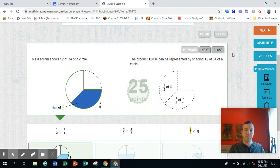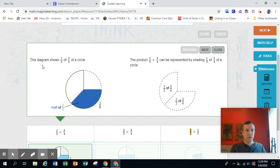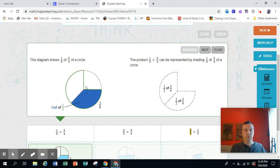Check. This diagram shows 1 half of 3 fourths of a circle. 3 fourths are green. Half of that is shaded blue.